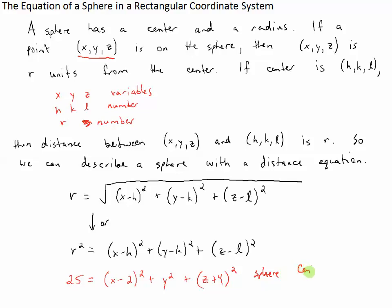The center is the ordered triple - well, the x-coordinate of the center must be positive 2, because h would be positive 2 here. The y would be 0, because y - 0 squared is just y². And l would be negative 4, because z minus negative 4 is the same thing as z + 4, so l must be negative 4. And then the radius - notice that the radius is squared in this equation, so this is the square of the radius, so the radius must be 5. So this is a sphere with that center and with that radius.